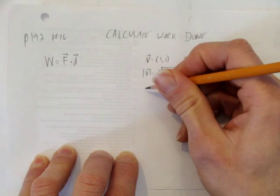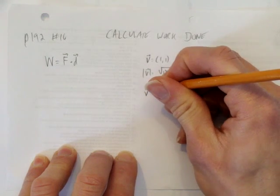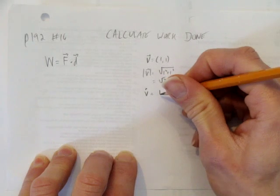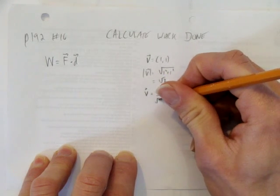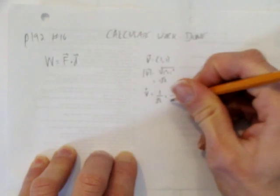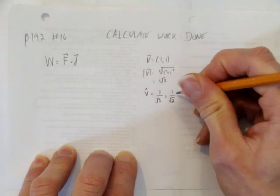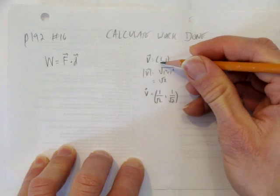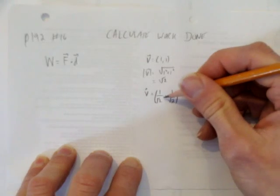So we have a unit vector in that direction of V, which is just going to be 1 over its magnitude and the other coordinate or component over its magnitude. So now we have the same vector we were given originally, but we have it as a unit vector.